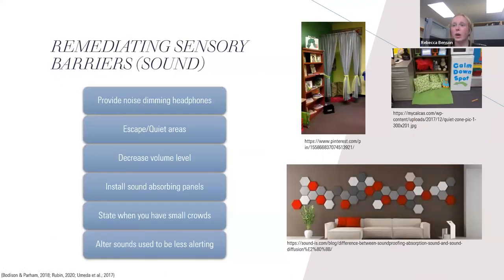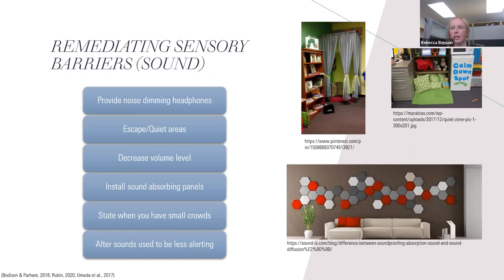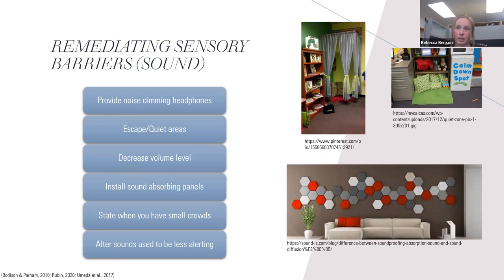Sensory barriers are huge for individuals with disabilities but also for people in the general public — many of us without a disability have sensory preferences. When you address these for individuals with disabilities, you're really making things better for everybody. For sound, provide noise-dimming headphones available for anyone. Have escape areas or quiet areas that anyone can use to calm down before returning to the environment. Decreasing volume levels can always help.